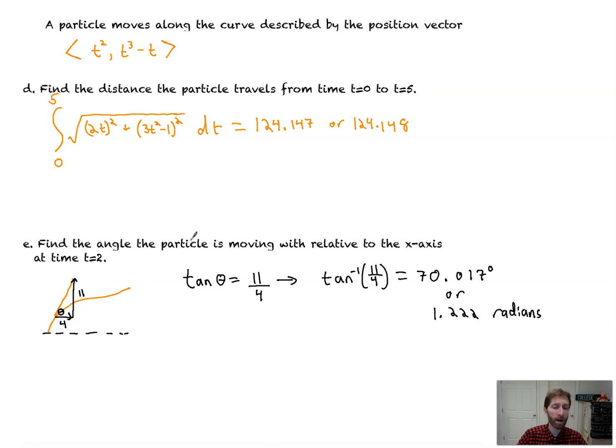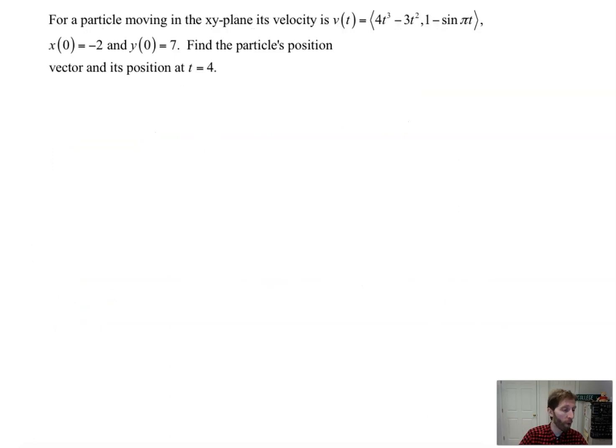So the idea there is you want to know the angle with respect to the x-axis. Essentially, how fast are we going upwards and over? Make a little triangle. Find the tangent inverse to get your angle there with respect to the x-axis. It's pretty cool. We've got one more little problem. And then we're done with the lesson. It's pretty exciting.